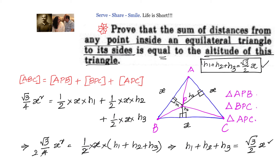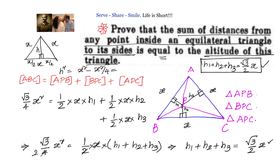If you are not clear how the altitude of an equilateral triangle is root 3 by 2 into x, let me explain. Take an equilateral triangle of side x, x, and x. If you drop a perpendicular, by congruency we can prove it is divided into two equal halves. Applying the Pythagorean theorem: h squared equals x squared minus x squared by 4, which equals 3x squared by 4. That gives h equals root 3 x divided by 2.